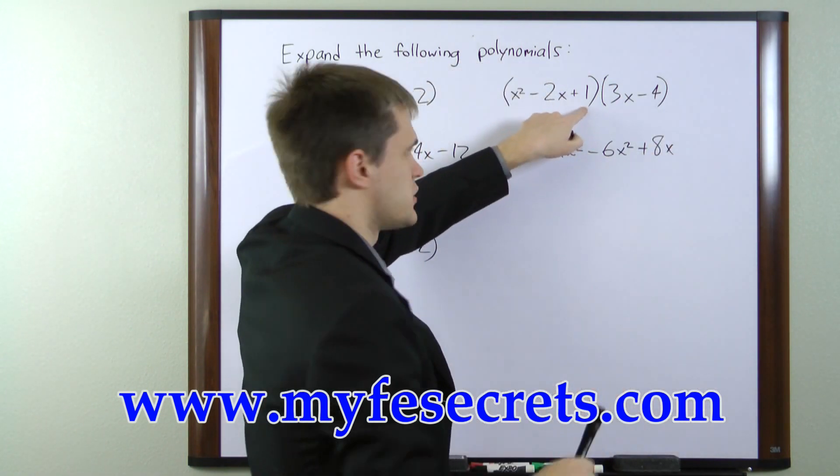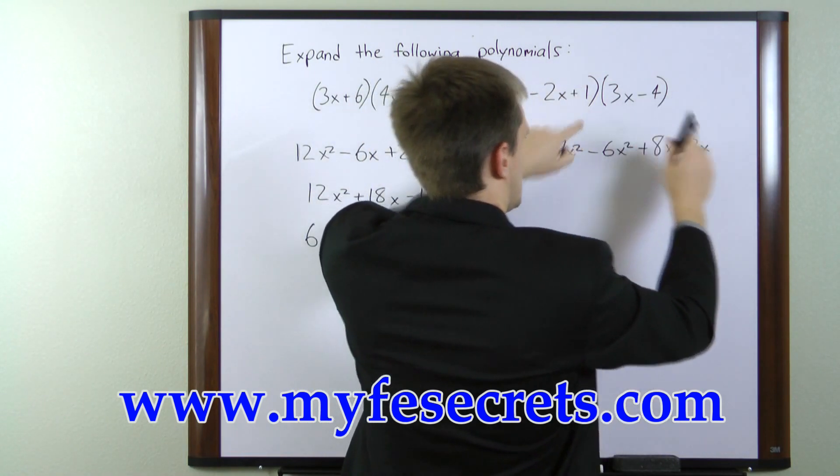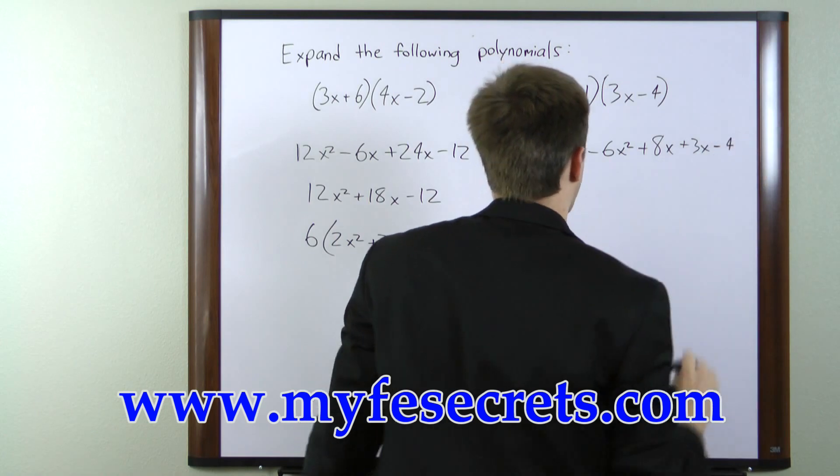Moving on to the third term here, 1 times 3x is 3x, and 1 times negative 4 is negative 4.